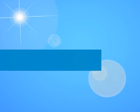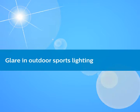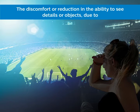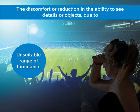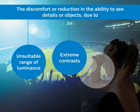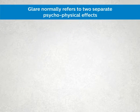Glare effect in sports lighting. What is the effect of glare in sports lighting? Glare is the discomfort or reduction in the ability to see details or objects due to unsuitable distribution or range of luminance or by extreme contrast. The term glare normally refers to two separate psychophysical effects.